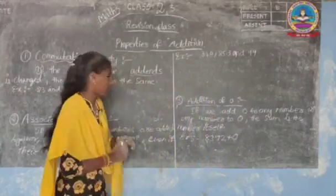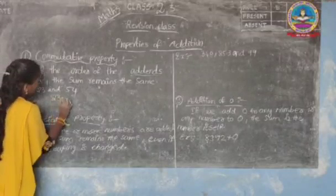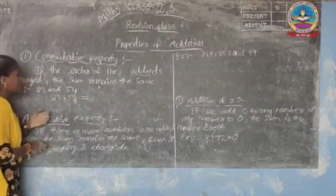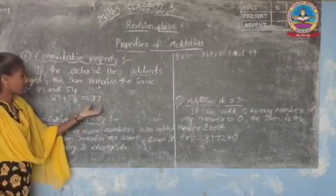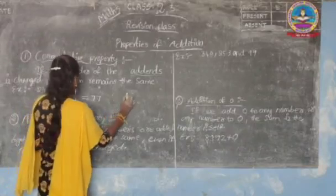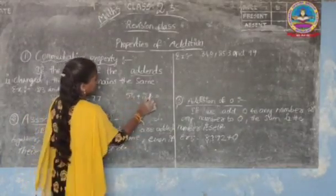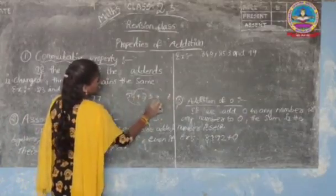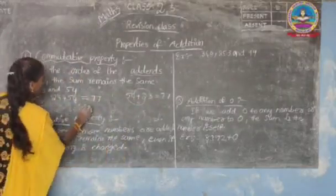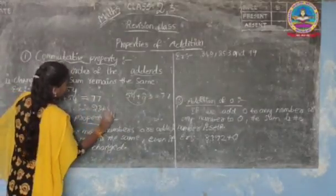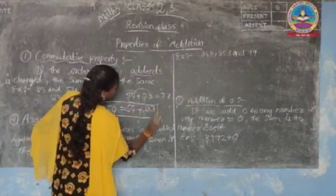Let us see if that is right. We have two numbers: 23 and 54. Let us add these two numbers. 23 plus 54: 4 plus 3 equals 7, and 5 plus 2 equals 7. The sum is 77. Now let us change the order: 54 plus 23. Again, 4 plus 3 is 7 and 2 plus 5 is 7, so the sum is still 77. That means 23 plus 54 equals 54 plus 23.